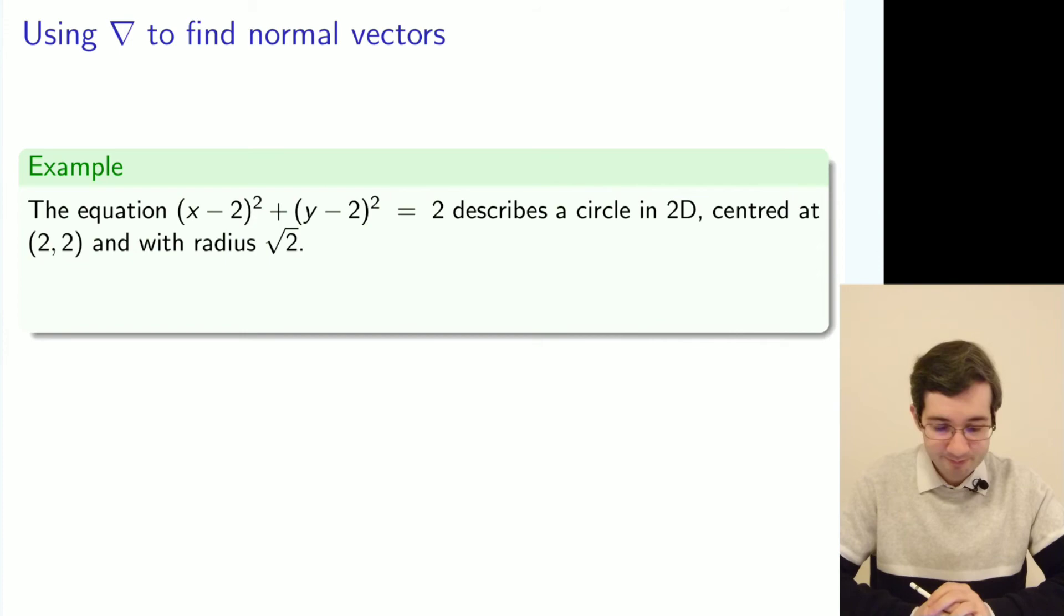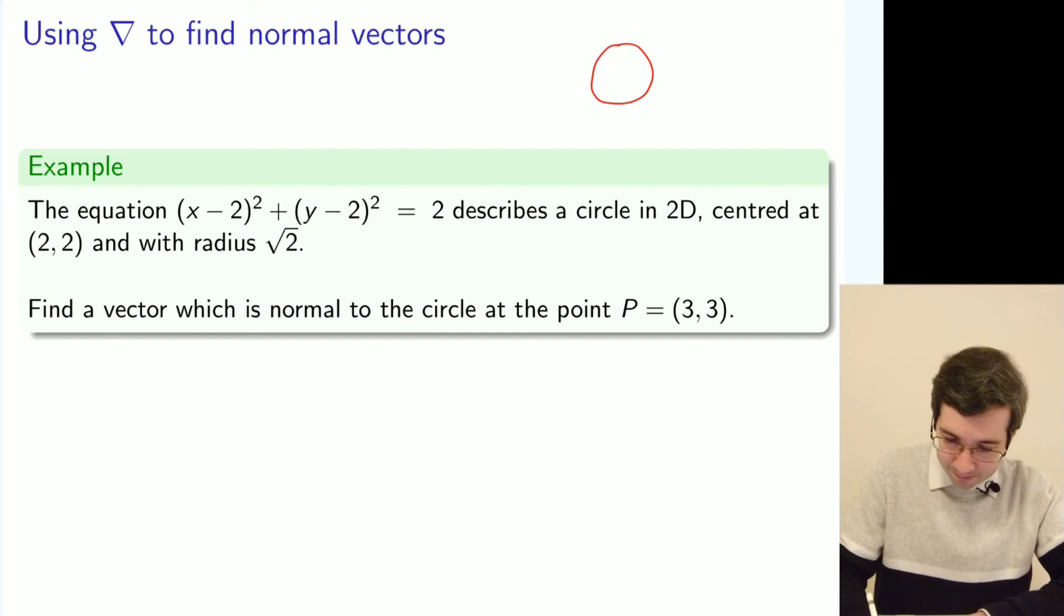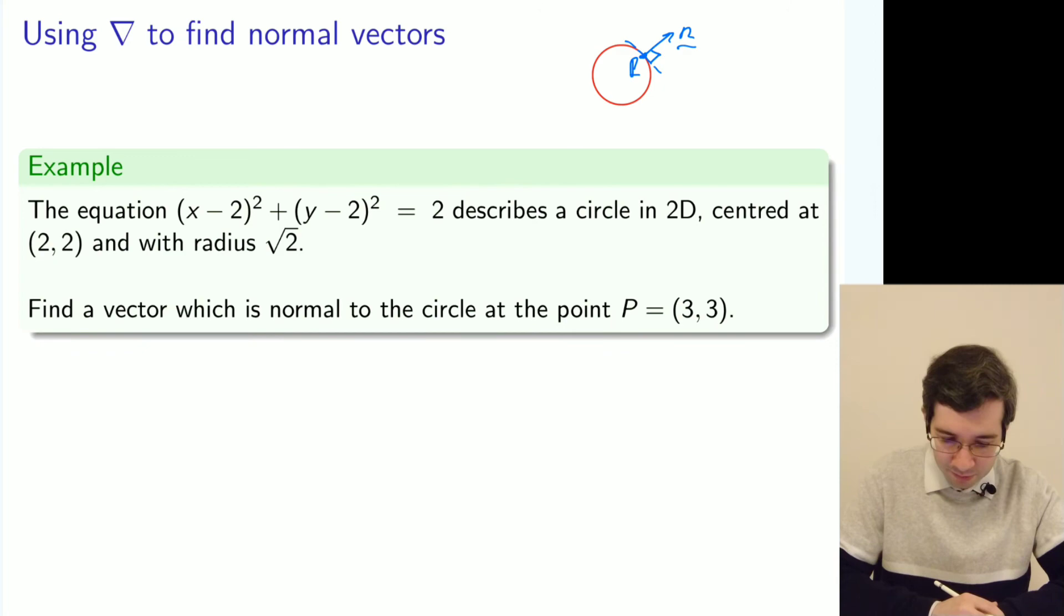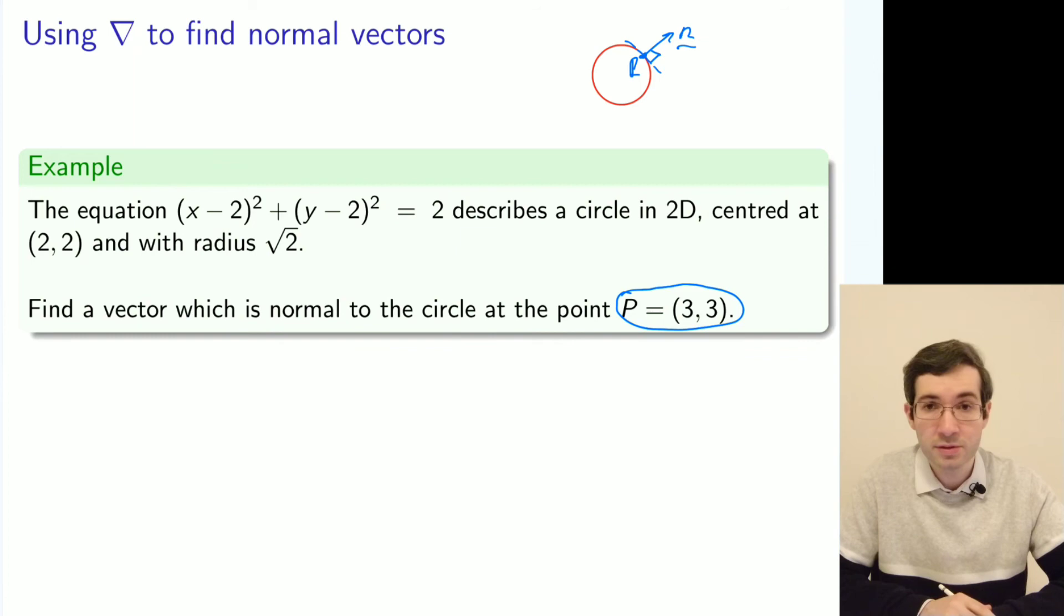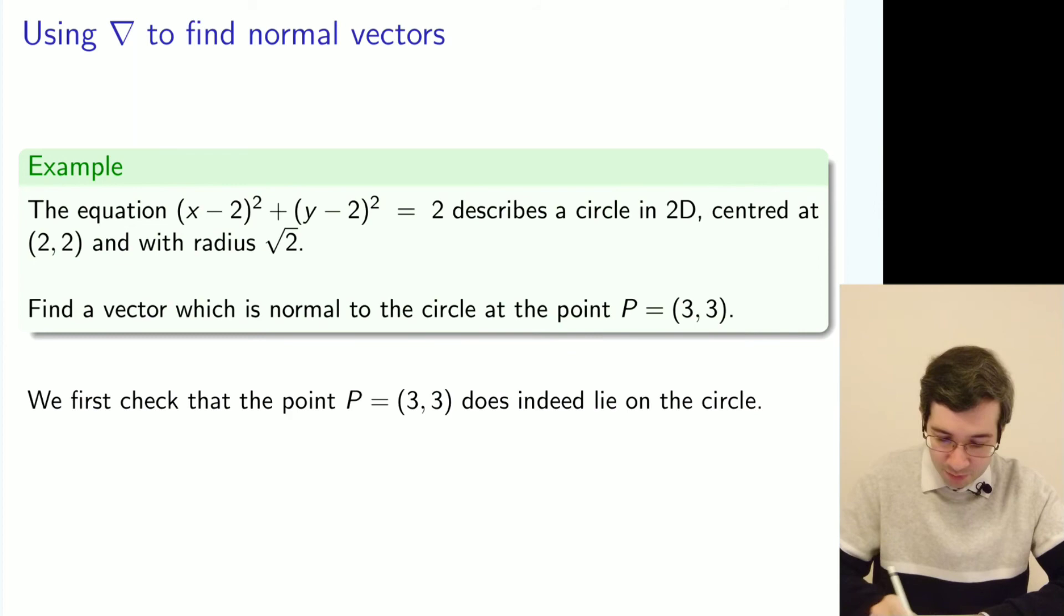Let's look at an example. Consider the equation which describes a circle. We want to find a normal vector at some point to that circle - the normal direction, not necessarily unit normal. We're told specifically which point we want to consider: (3, 3). First, let's check that this point belongs to the circle by substituting x equals 3 and y equals 3 into our equation. And indeed it does.